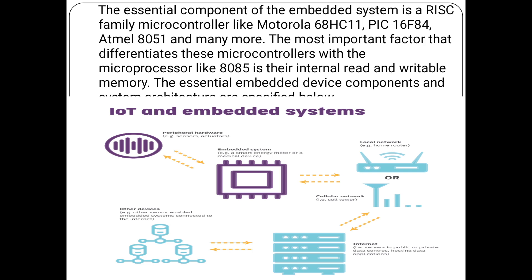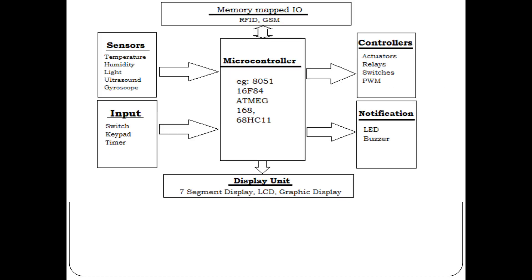The essential embedded system components and architecture combine IoT and the embedded system. Most of the components can communicate through the device to get the maximum output. The IoT and embedded system combine to form the embedded device for which the data transfer is maximized. We will have a memory-mapped I/O and RFID. Data are taken from sensors as input — temperature, humidity, light, ultrasound, and gyroscope — as well as input from switch and keypad.